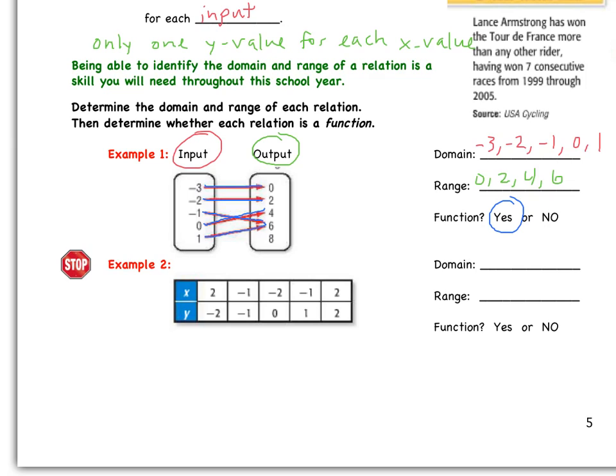This scenario would change, or our answer of whether it's a function or not, that would change if, for instance, when I plugged one in, not only does it point to six, but maybe it also points to eight. Therefore, that input value of one has two distinct output values. That cannot happen if we're dealing with a function. In this case, one only has one output value, so it turns out it is a function.